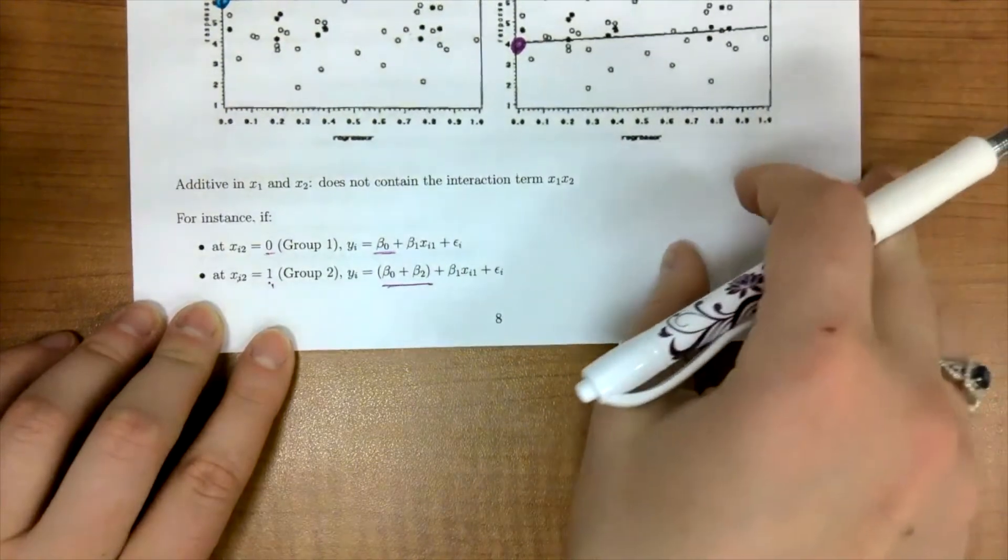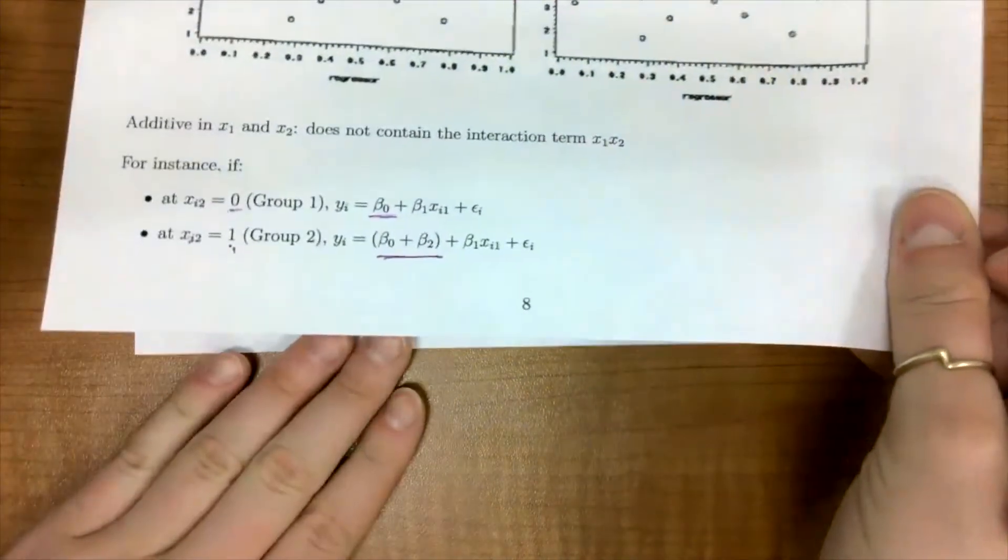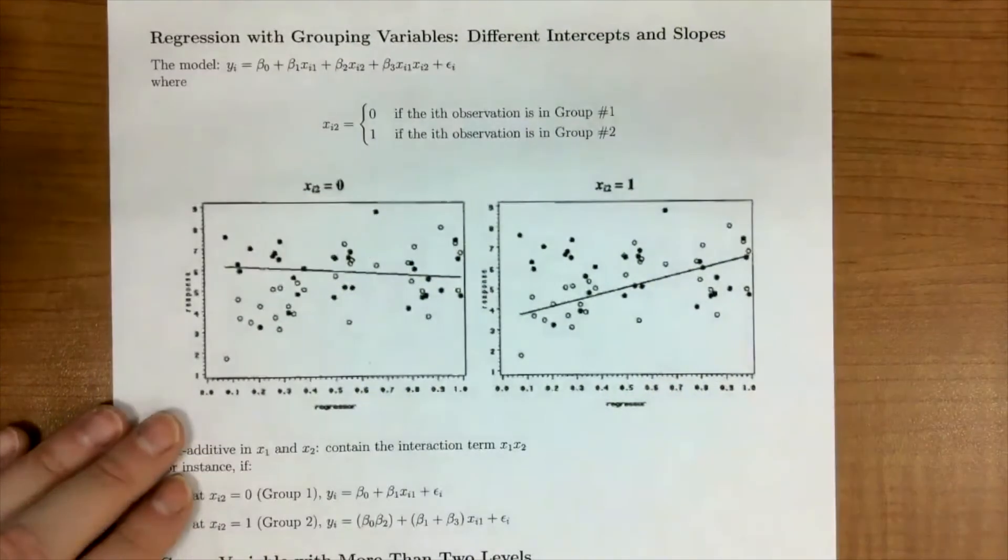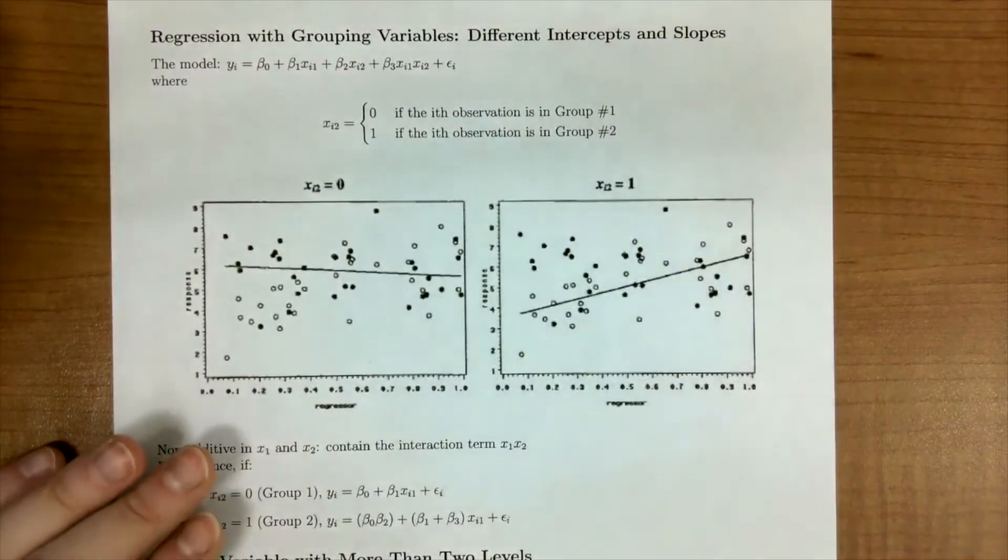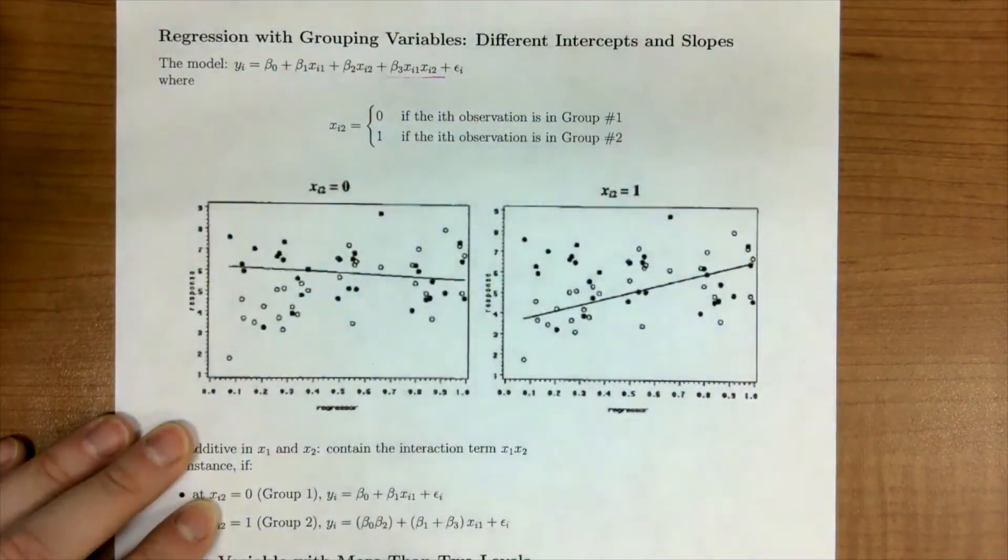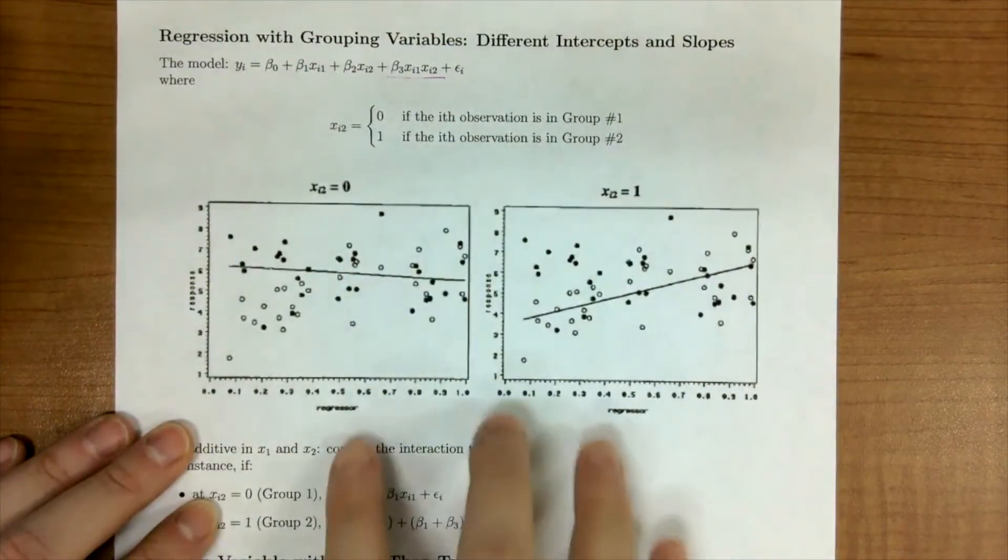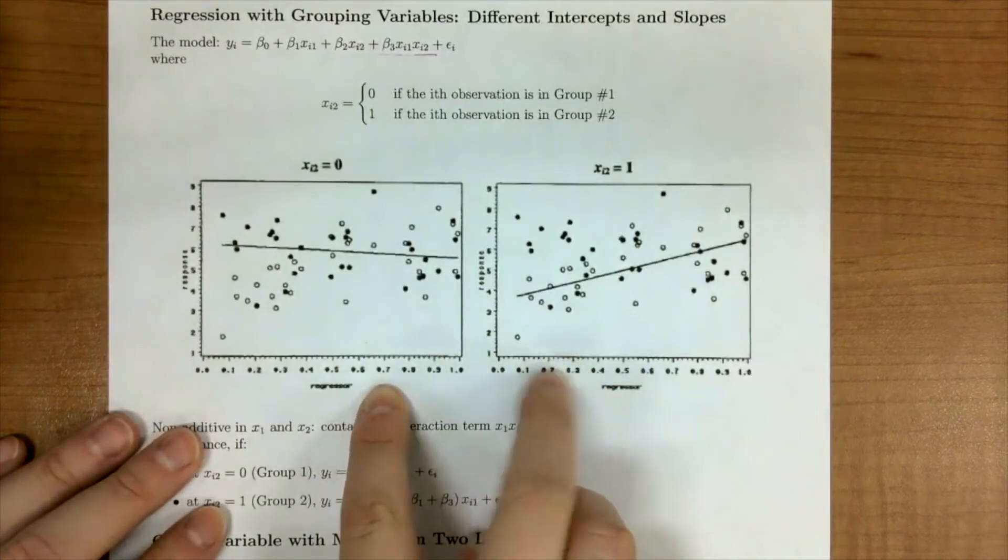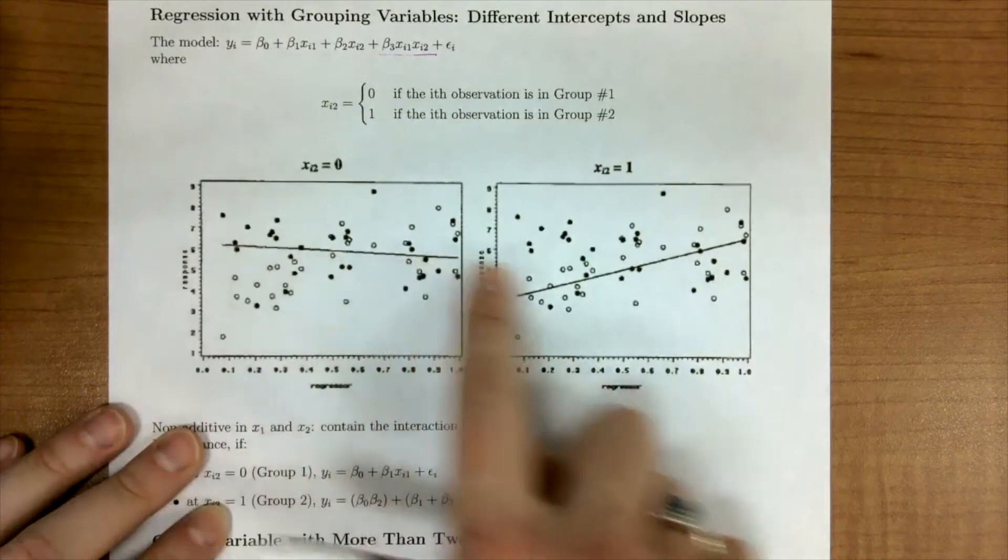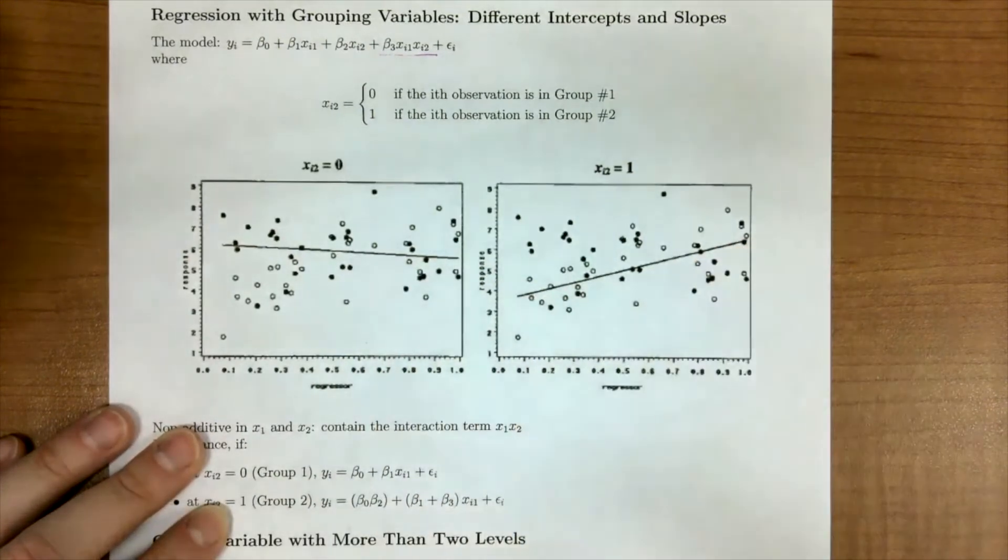Another way we could have, another thing that could happen, is that we include the interaction term, which is then going to allow us to have different intercepts and different slopes. So now we have this interaction term here. So if we're to look at these two pictures, our intercepts are different, and then we can also notice that the slopes of these lines are also different.